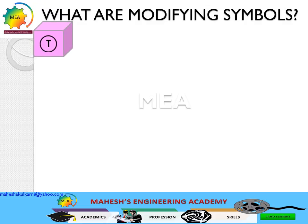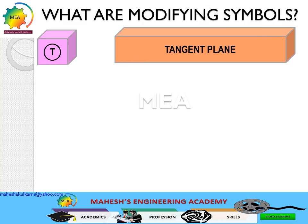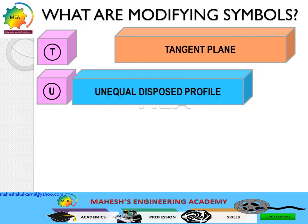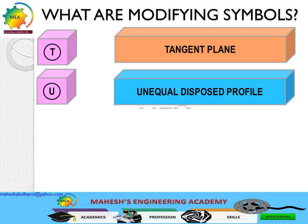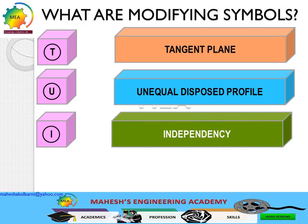The circled T stands for tangent plane. The circled U stands for unequal disposed profiles. The circled I represents independency. Whenever this modifier is used with the size or dimension, it means that particular feature of size is independent of perfect form — the perfect form at MMC is not required.